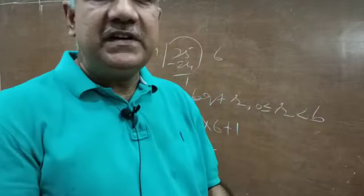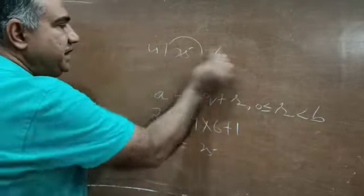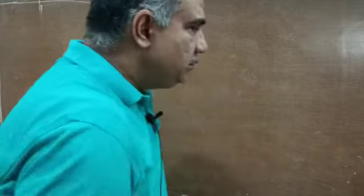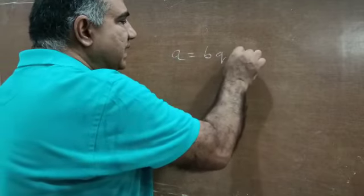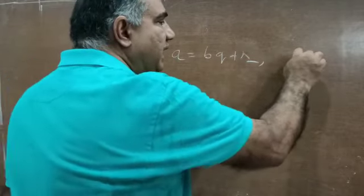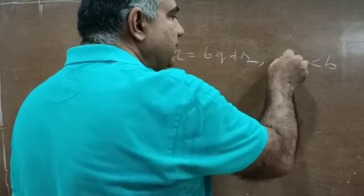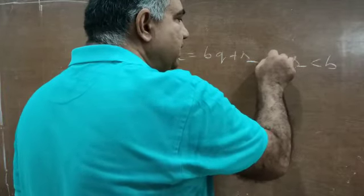Hello students. In the previous class we have seen what is the difference between Euclid's Division Lemma and Euclid's Division Algorithm. We will elaborate a little more here, and then come straight to the Euclid's Division Algorithm and its application. So if I write a is equal to bq plus r, and r is less than b but can be equal to or greater than 0.